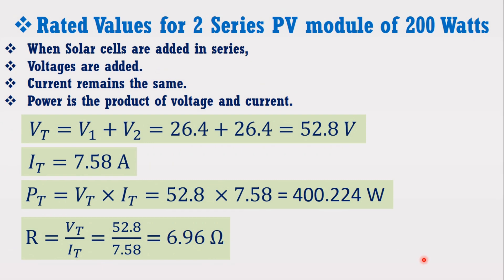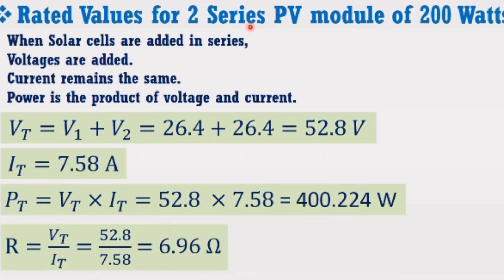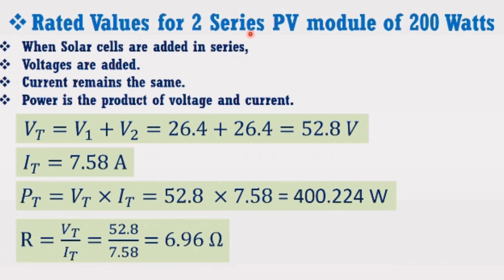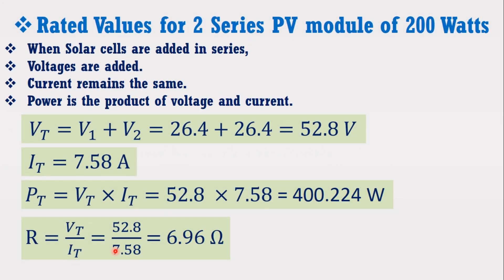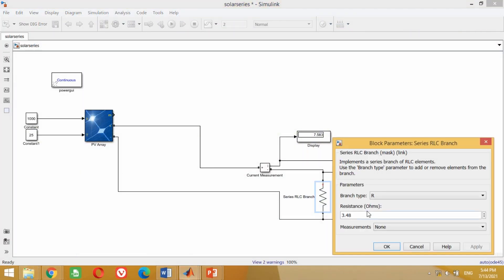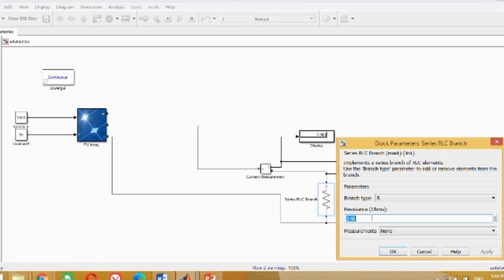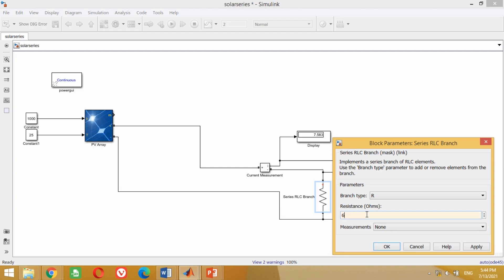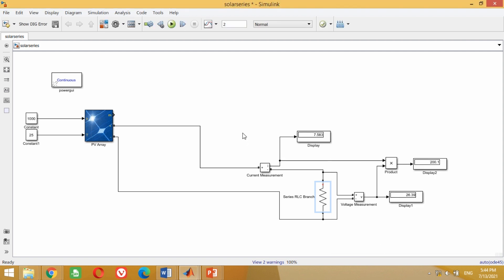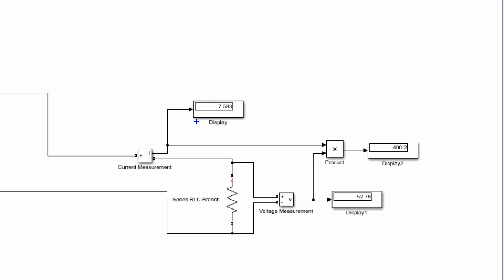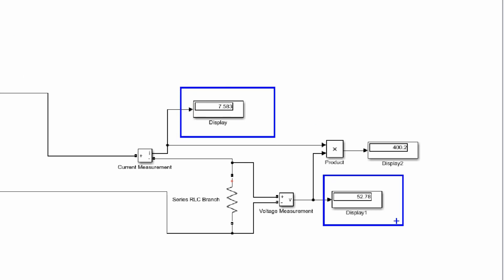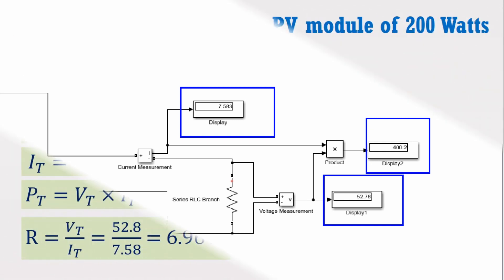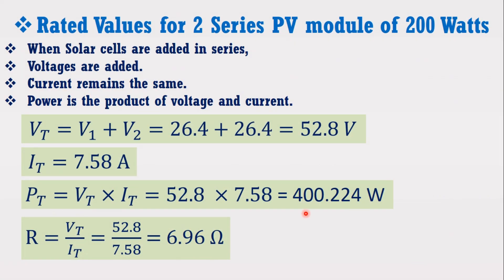Keep the other settings as shown and press OK. Now we have to set the resistor value for this condition. When two solar PV arrays are added in series, their resistance value will become 6.96 ohm. Therefore, come to the model, double click on the resistor block, put the resistor value of 6.96 ohm and press OK. Now run the simulation by clicking the play button. You can see it has successfully measured the voltage, current, and power. Comparing the results with the mathematically calculated values, all results are correct.